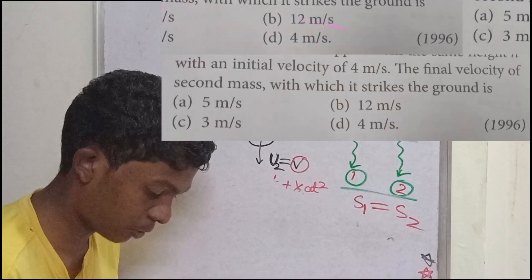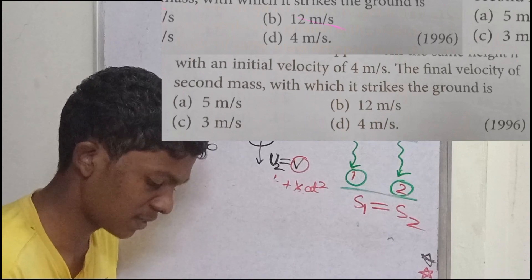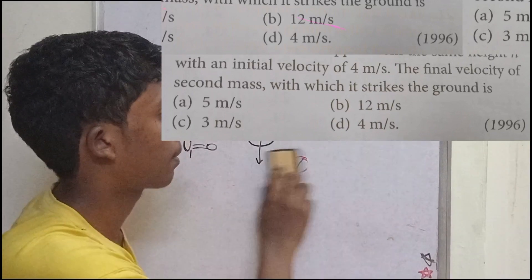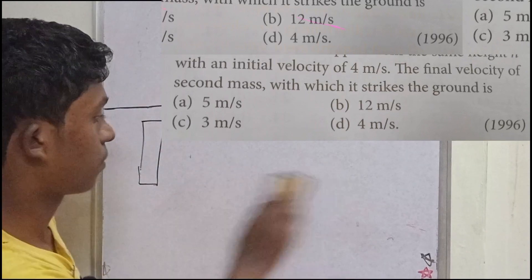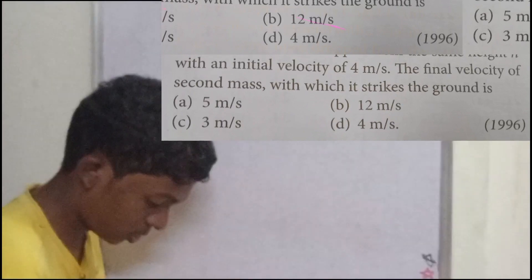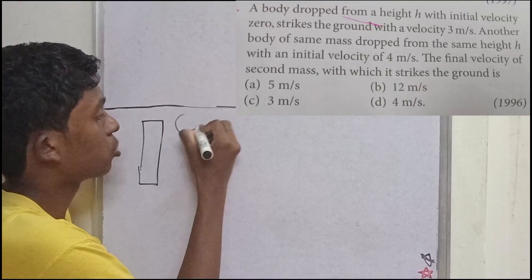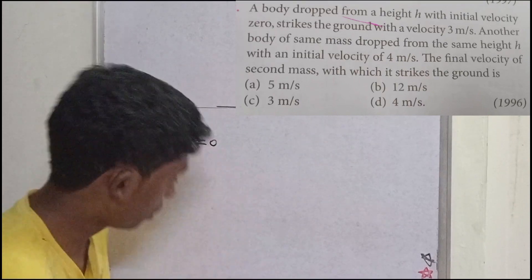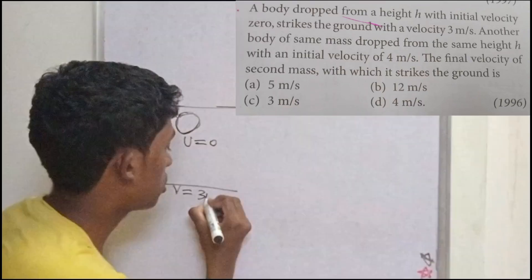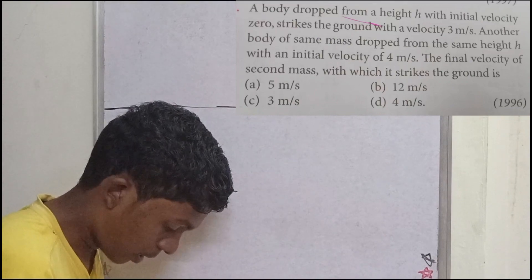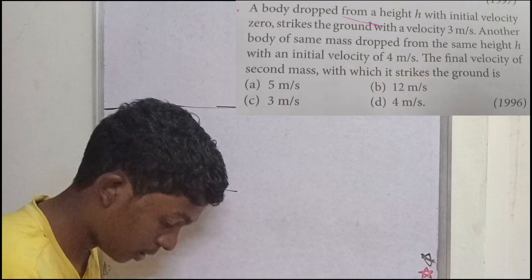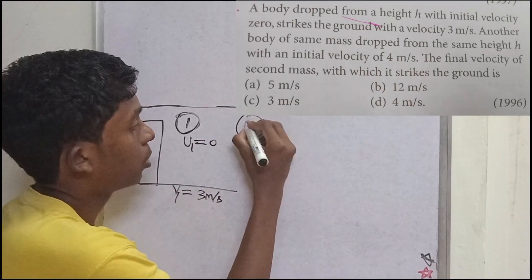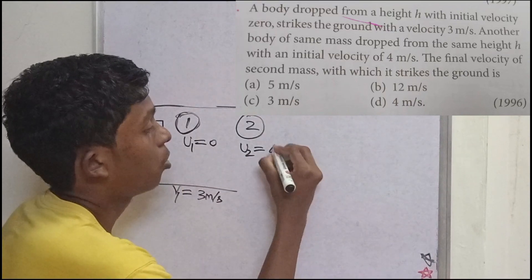The next question is from 1996. A body is dropped from a height H with initial velocity 0 and strikes the ground with velocity 3 meters per second. Another body of the same mass is dropped from the same height with initial velocity 4 meters per second. Ball 1 has U1 equal to 0, V1 equal to 3. Ball 2 has U2 equal to 4 meters per second, and we need to find V2.